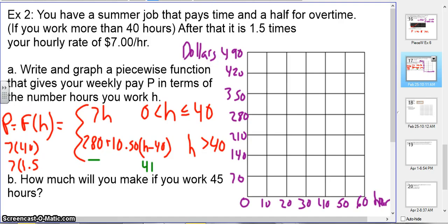So to graph it, at 0 hours, obviously, I'm not going to make any money. So there's my open circle. So it's $70 every 10 hours. So there's up to 40.